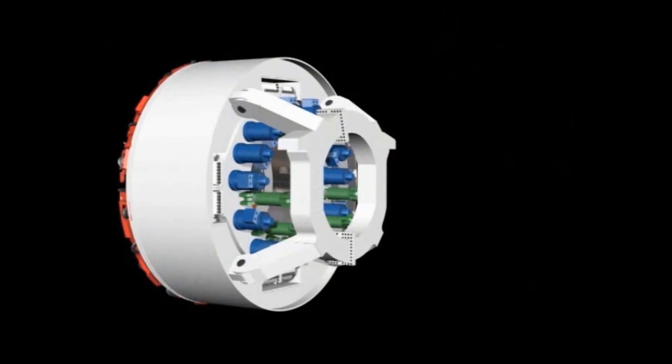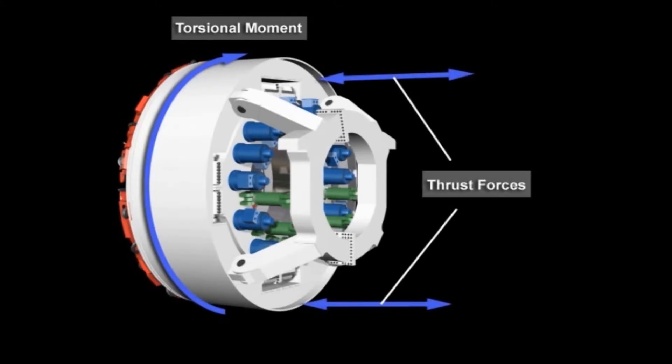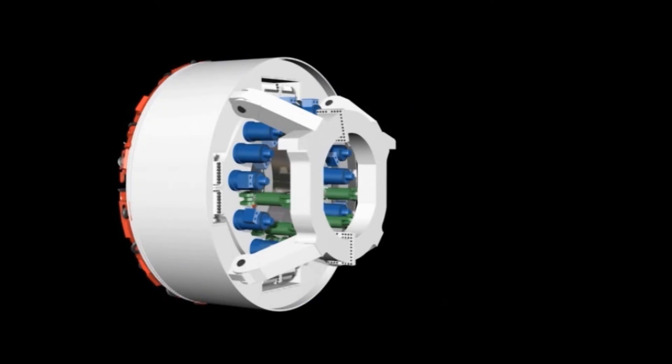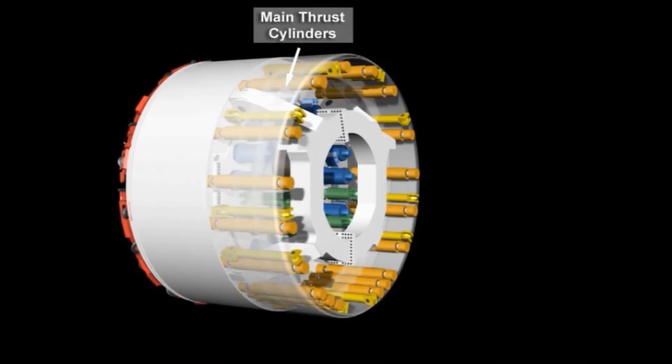Of particular importance for the double shield is the transmission of the torsional moment resulting from the excavation and the required thrust forces between front shield and gripper shield. The thrust forces working in the longitudinal direction of the tunnel are produced by the main thrust cylinders, which connect the steel structure of the front shield and the gripper shield.